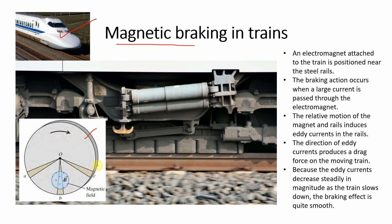Trains کے اندر wheel کے ایک مخصوص region کے اوپر ایک electro magnet لگا دیا جاتا ہے۔ جب brake لگانا مقصود ہوتا ہے تو یہ electro magnet active ہو جاتا ہے اور ایک opposing force create ہوتی ہے جس سے brake لگ جاتی ہے۔ Train کی جتنی بھی cars ہوں گی ہر car کے اندر یہ breaking system موجود ہوگا۔ An electro magnet attached to the train is positioned near the steel rails; breaking action occurs when large current is passed through the electro magnet۔